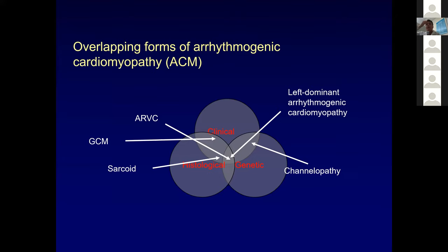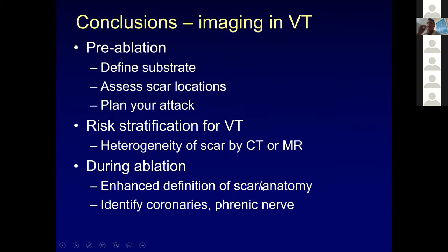Imaging really can be helpful. These arrhythmogenic cardiomyopathies are challenging — there can be a lot of overlap at the histological, clinical, and genetic level. In conclusion, can we use imaging to define substrate beforehand? Can we assess scar locations to plan our attack? I think there will be more data emerging. Can we use it for risk stratification for VT and predicting arrhythmogenesis? The heterogeneity of scar by CT or MR could be a compelling way to predict arrhythmogenesis. Can we use it during ablation to enhance our definition of scar and anatomy, and to navigate and avoid the coronaries?